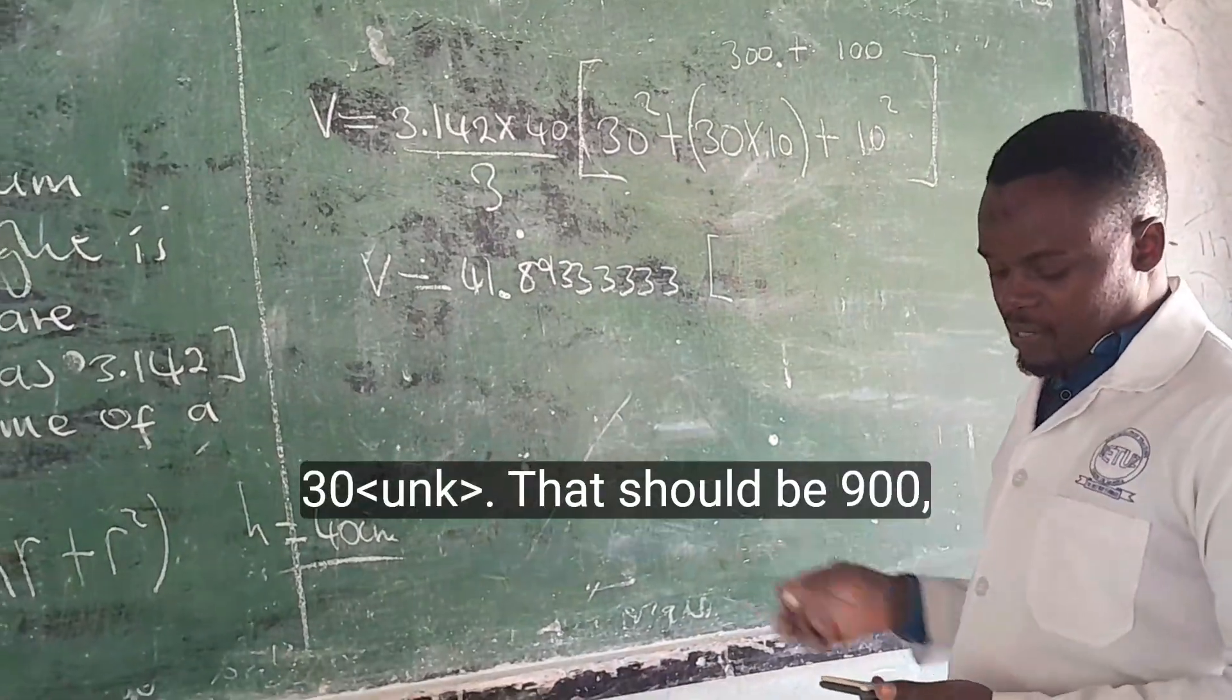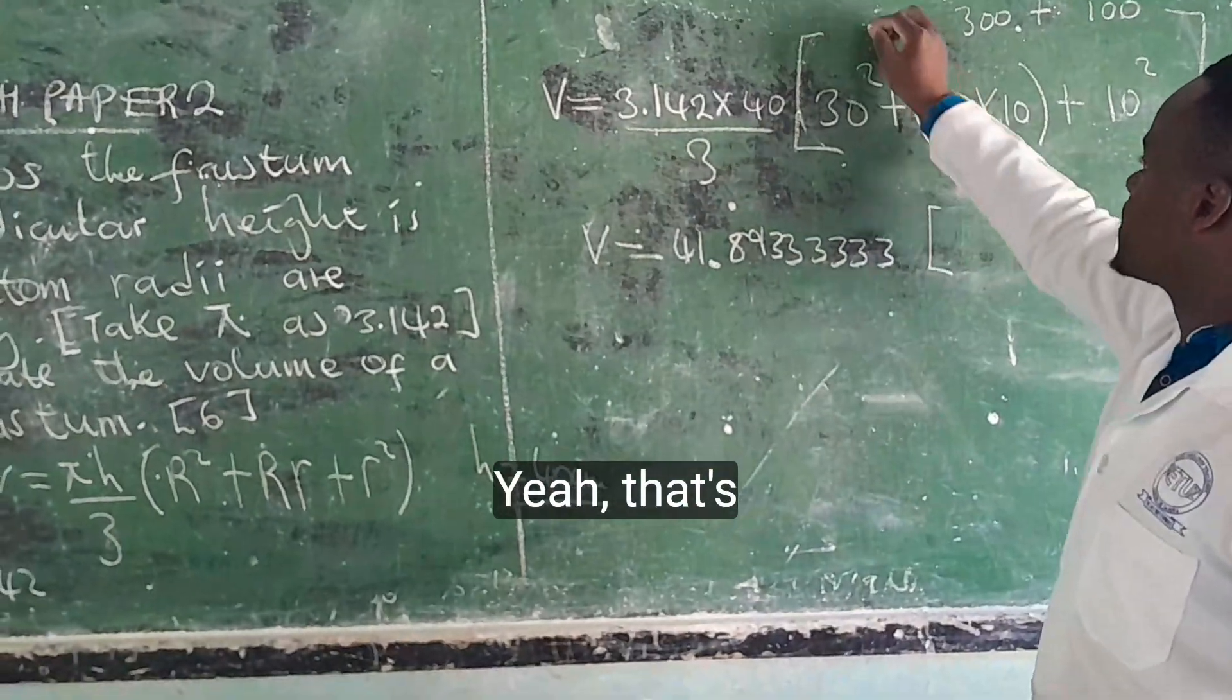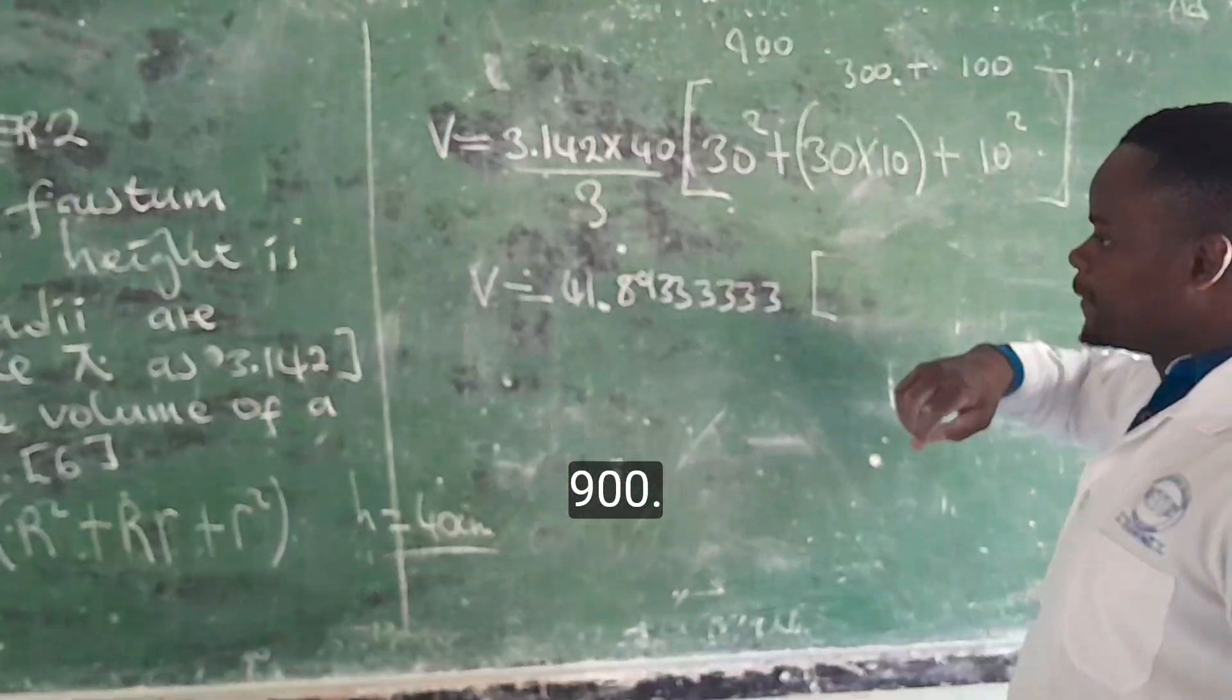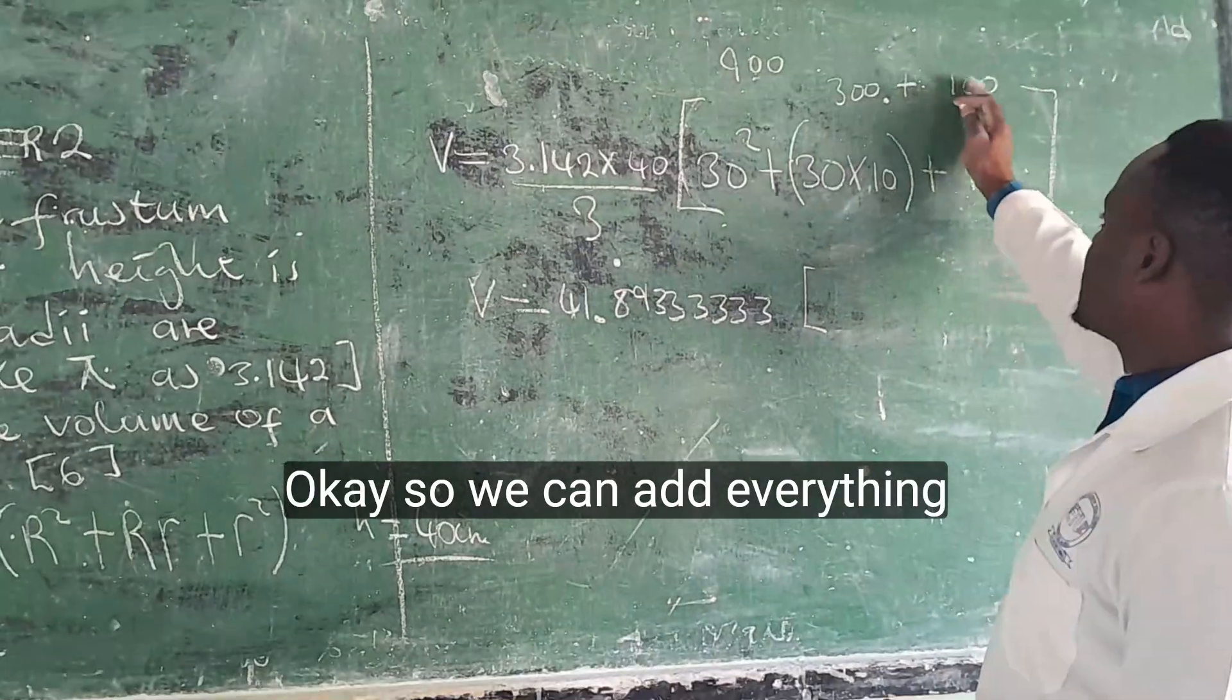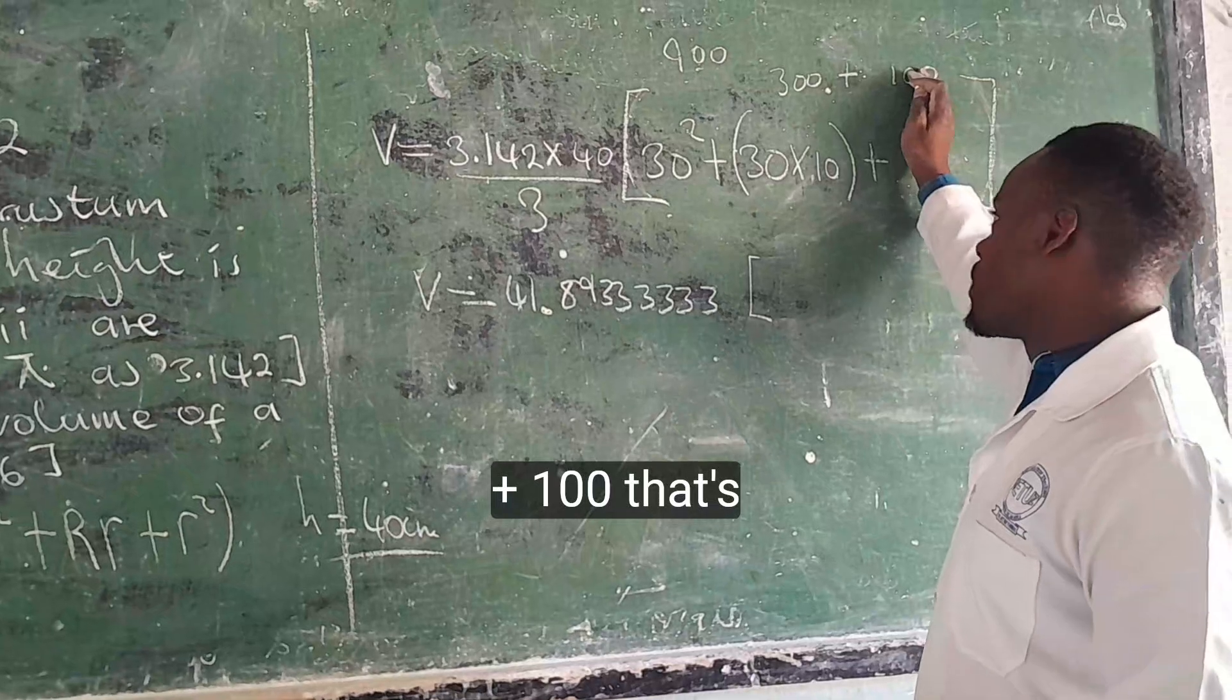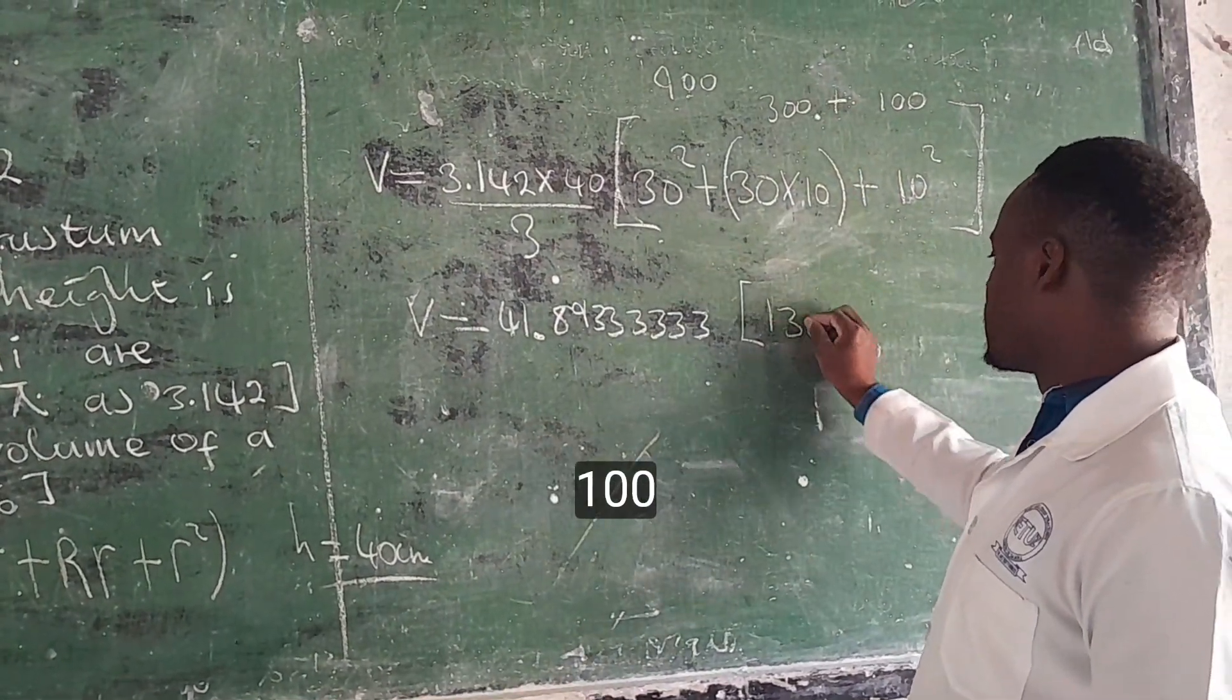Then 30 squared, that should be 900. 10 squared, that's 100. So we can add everything now. 900 plus 100 plus 300 is 1300.